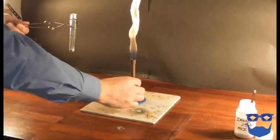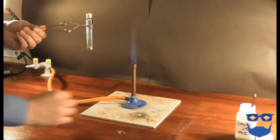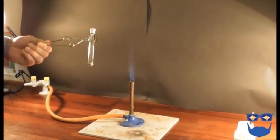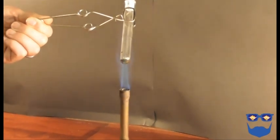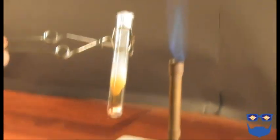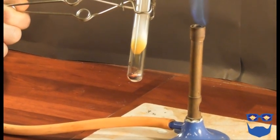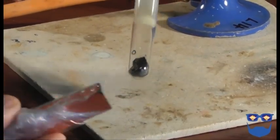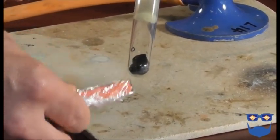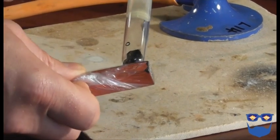Heat the mixture strongly with a blue flame until you see a chemical reaction start. Remove the test tube from the heat. You should observe the mixture continue to glow as the iron and sulfur react. Let's do it.